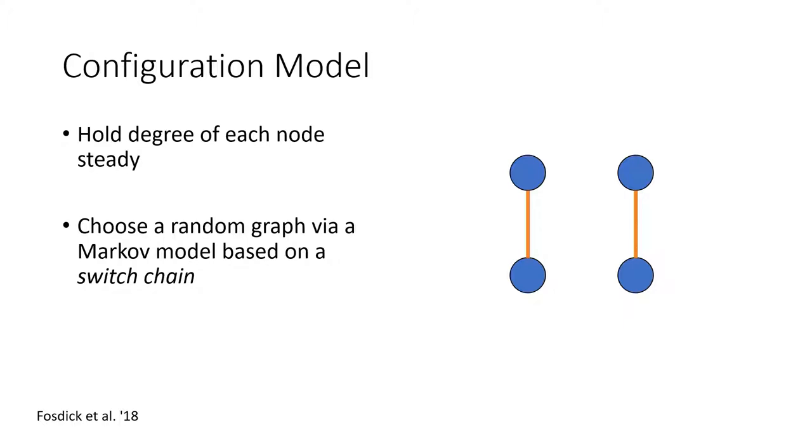A switch chain is a very simple move. You find four nodes, essentially they have two edges like this, and you simply switch them. And if you do enough random switch moves, you're guaranteed to get a completely random graph with a given degree sequence.